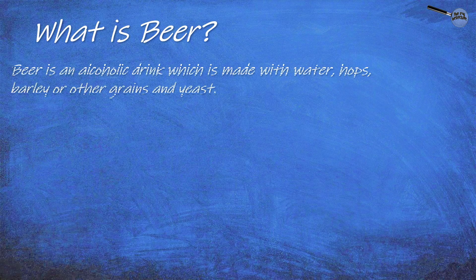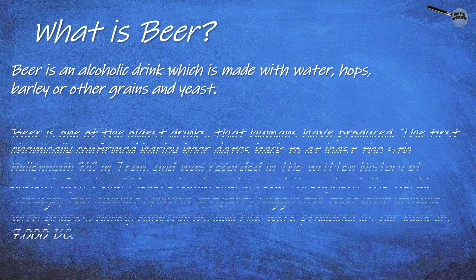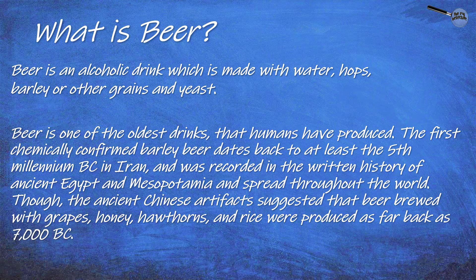What is beer? Beer is an alcoholic drink made with water, hops, barley or other grains, and yeast. Beer is one of the oldest drinks that humans have produced. The first chemically confirmed barley beer dates back to at least the 5th millennium BC in Iran, and was recorded in the written history of ancient Egypt and Mesopotamia.